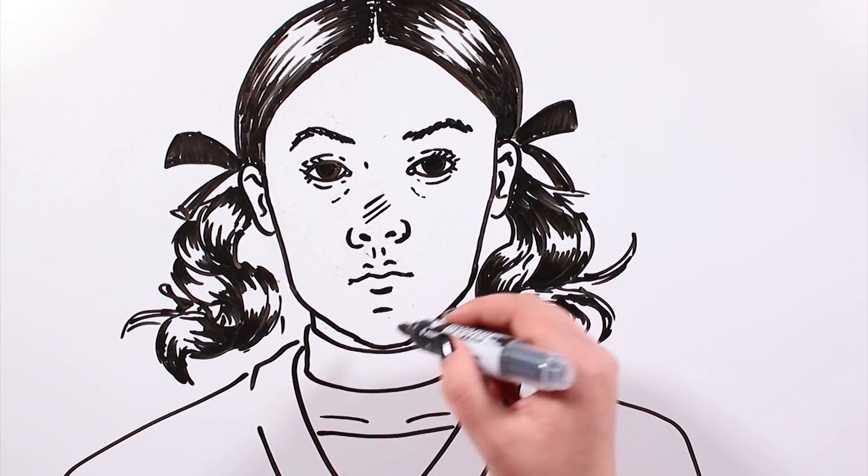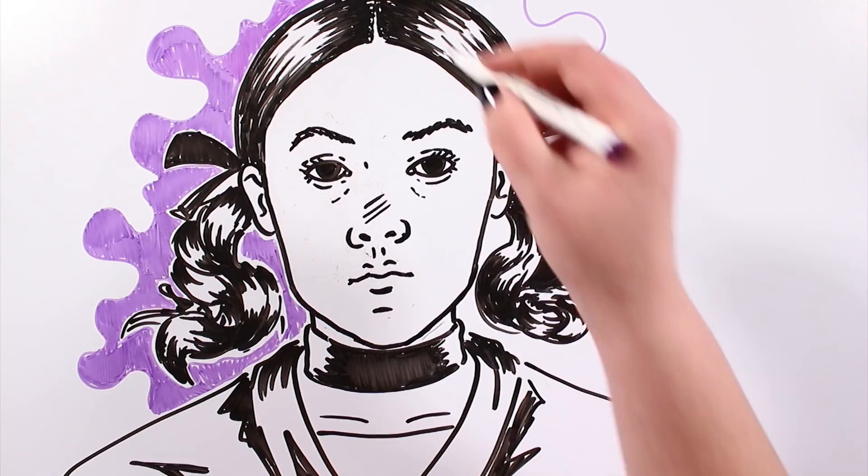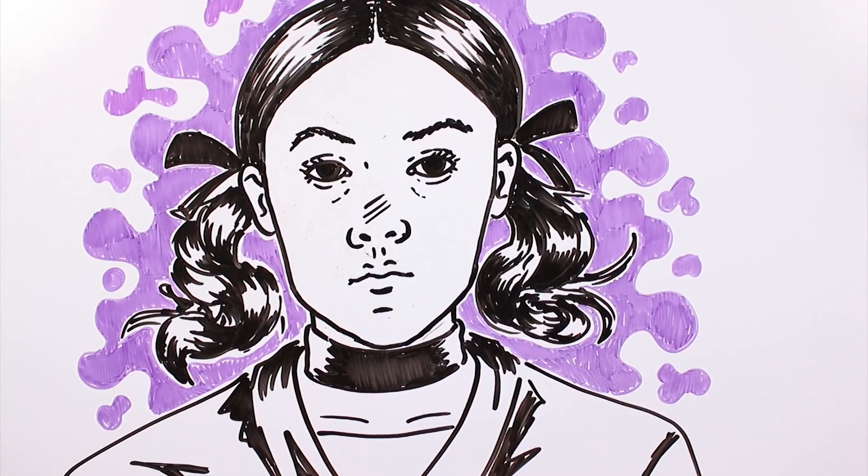After several macabre scenes, we discover Esther is actually 33 years old. She is a woman with a strange disease and many mental disorders. It sounds like science fiction, right?